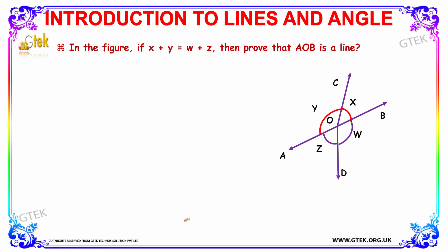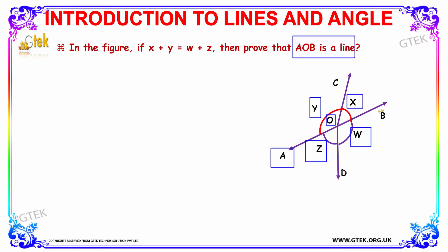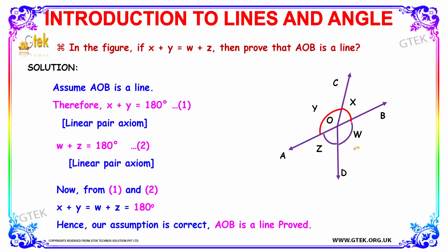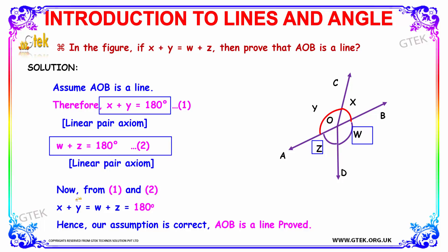Next example: In a figure, if X plus Y equals W plus Z, prove that AOB is a line. Solution: Assume AOB is a line. Therefore X plus Y equals 180 degrees — equation 1. Similarly, W plus Z equals 180 degrees since it is a straight line — equation 2. From equations 1 and 2, X plus Y equals W plus Z equals 180 degrees. Hence our assumption is correct and AOB is a line, which has been proved.